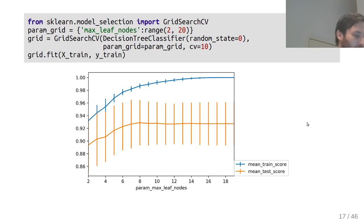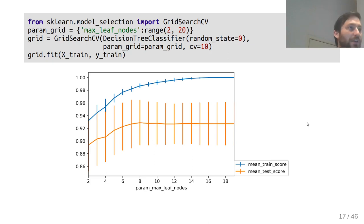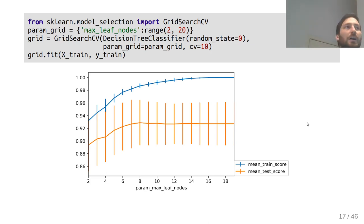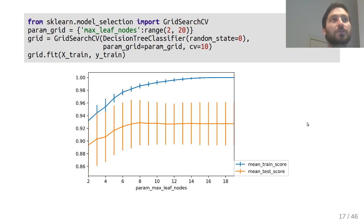For max_leaf_nodes, you can get away with a smaller model. On this small dataset with wide error bars, max_leaf_nodes=8 seems optimal — and we already printed that tree and it looked reasonable. You could tune multiple parameters simultaneously if you're patient, but usually it's sufficient to tune one or maybe two.